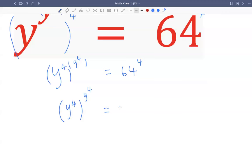64 is 8 squared. So we write 8 squared, then raised to the fourth. With two layers of exponents, we multiply them, so we have 8 to the eighth. Now you see the pattern matched on both sides. So we can conclude y to the fourth equals 8.